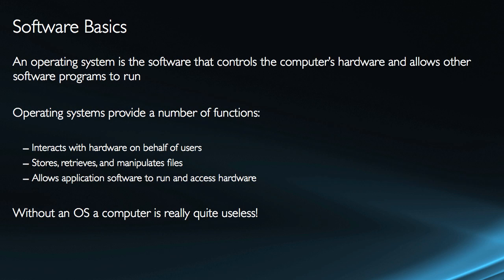An operating system is the software that actually controls all the hardware, and it's software that allows other software programs to run. The operating system does a number of things on my behalf — it interacts with hardware for me, it stores, retrieves, and manipulates files on the disk drive and in memory, and it allows application software to run and access hardware. Without an operating system, a computer is completely useless. You have to have an operating system to use the hardware and to run other programs.